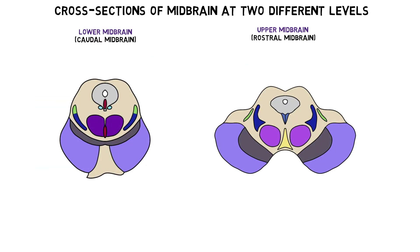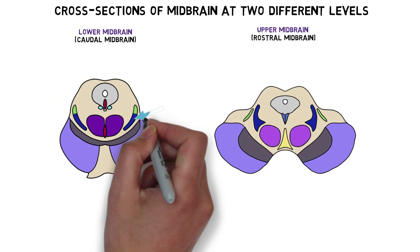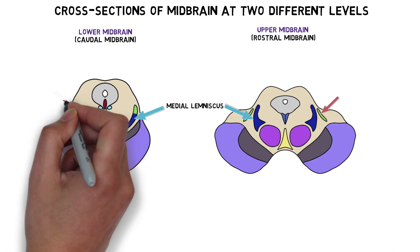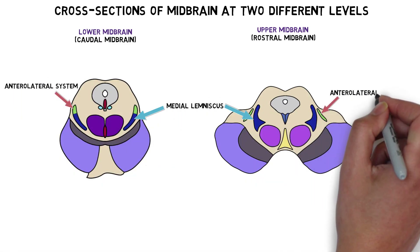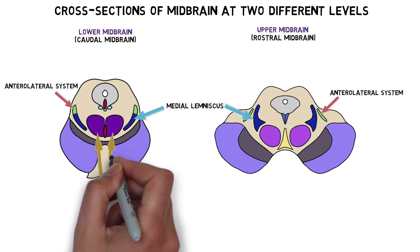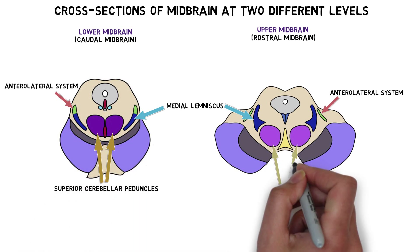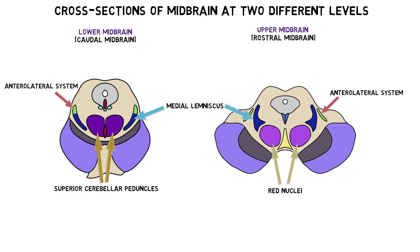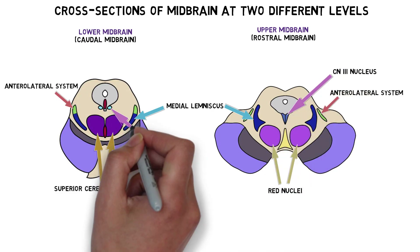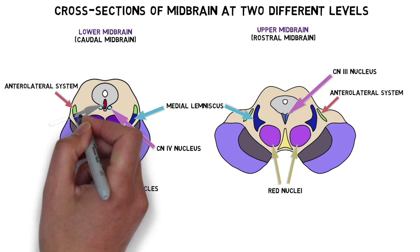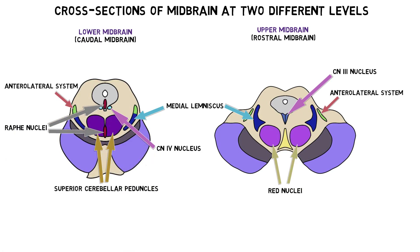The tegmentum contains a variety of ascending and descending tracts, like the medial lemniscus and anterolateral tracts. It also contains fibers from the superior cerebellar peduncles, the main output pathway of the cerebellum, and the red nucleus, a nucleus thought to play a role in motor coordination. The tegmentum contains nuclei for cranial nerves three and four, as well as neurons that are part of the raphe nuclei, the major serotonin-producing neurons in the brain, and the ventral tegmental area, one of the largest collections of dopamine-producing neurons in the brain.